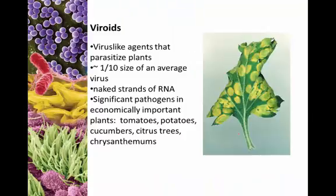There are virus-like agents that very specifically parasitize plants. These are what we call viroids. They specifically target plants, and most commonly we see these being an issue for economically important crop plants — tomatoes, cucumbers, chrysanthemum, citrus trees, potatoes. If you ever see your tomatoes go bad with little spots on them, those are areas of viroid infection. We also see an issue with mums.